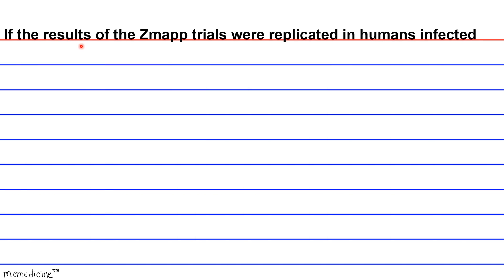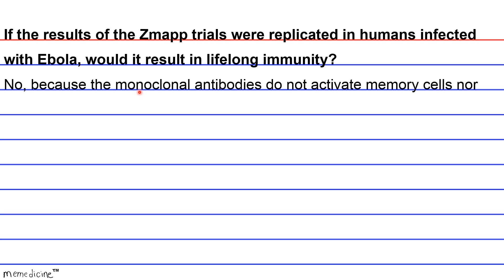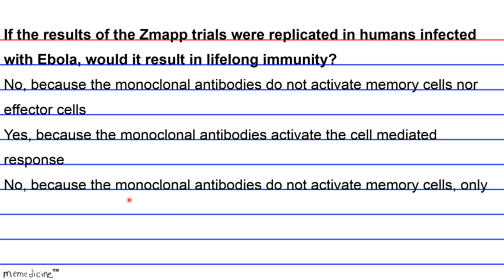Question: If the results of the ZMAP trials were replicated in humans infected with Ebola, would it result in lifelong immunity? A — No, because the monoclonal antibodies do not activate memory cells nor effector cells. B — Yes, because the monoclonal antibodies activate the cell-mediated response. C — No, because the monoclonal antibodies do not activate memory cells, only effector cells.